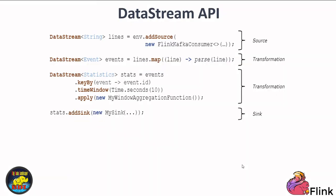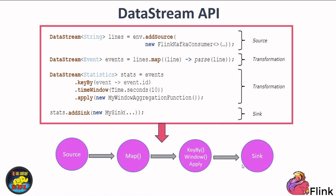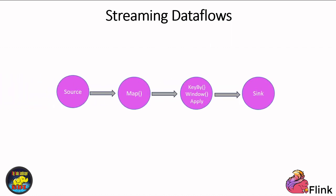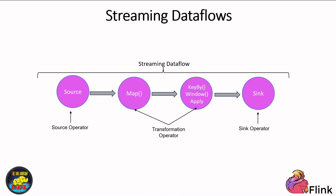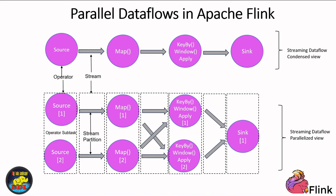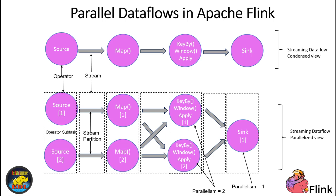In Apache Flink, parallel data flows are the backbone of high-performance stream processing. Let's explore how this parallelism works and how data flows within Flink. In Flink, data streams are divided into stream partitions, which are independent segments of the stream processed separately. Within each operator, there are multiple operator subtasks running independently, possibly on different machines or threads. The number of subtasks defines an operator's parallelism level, and different operators within the same program can have varying levels of parallelism. One-to-one streams maintain the order and partitioning of elements, ensuring consistent processing.